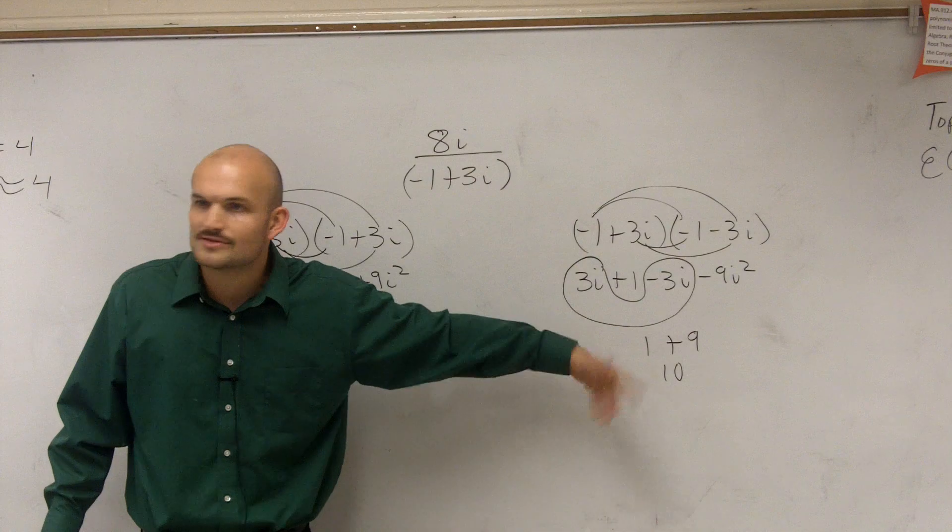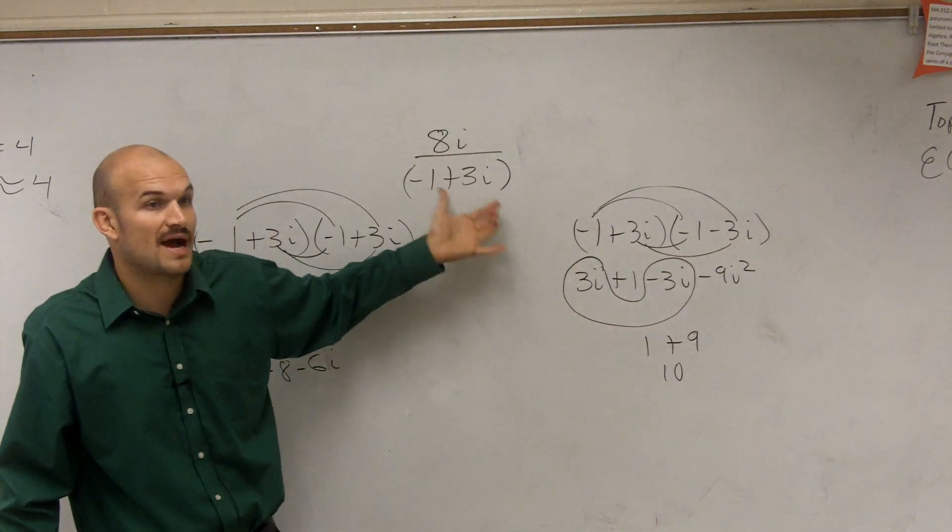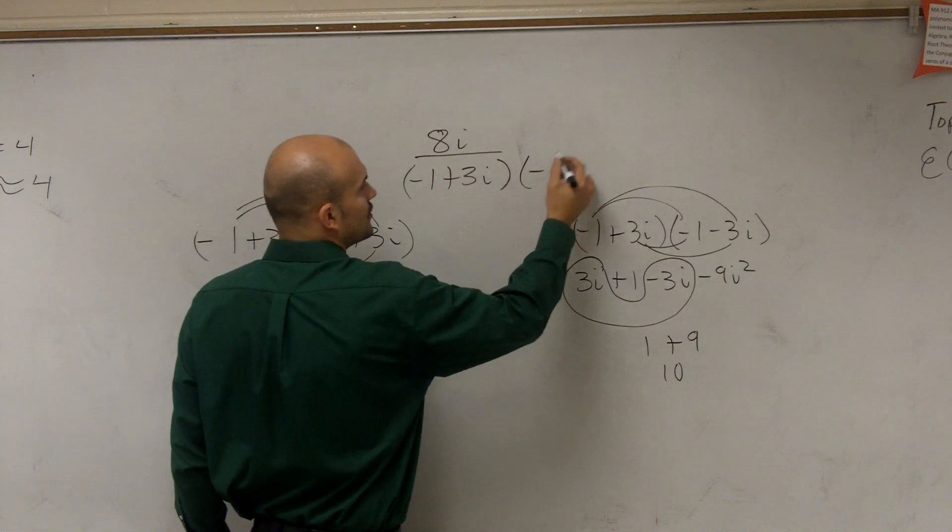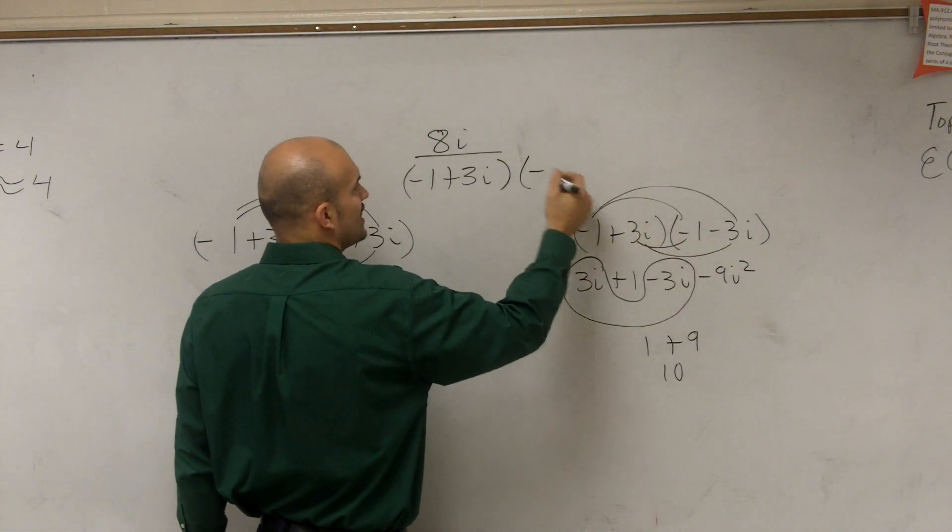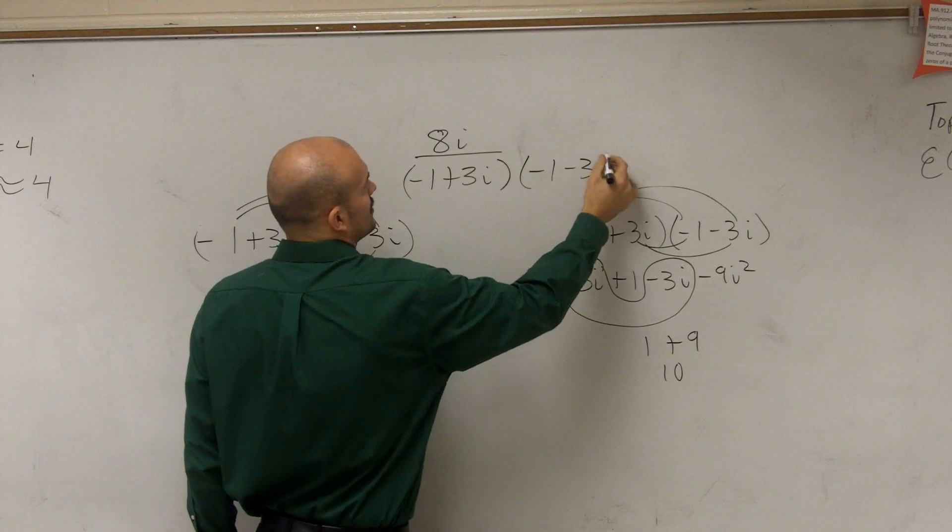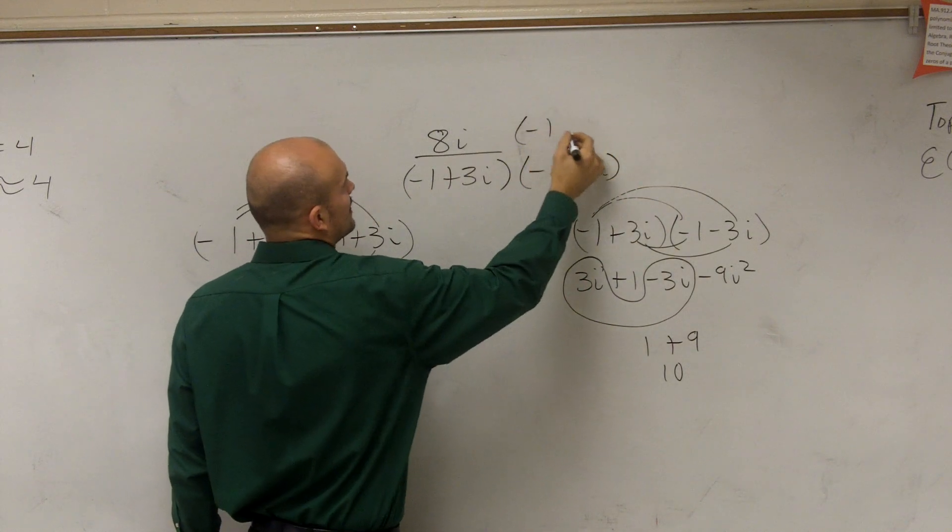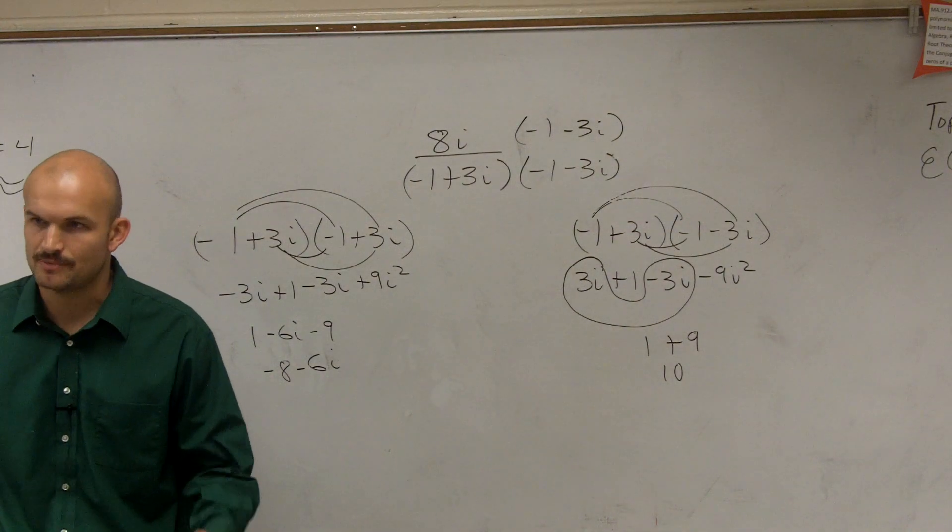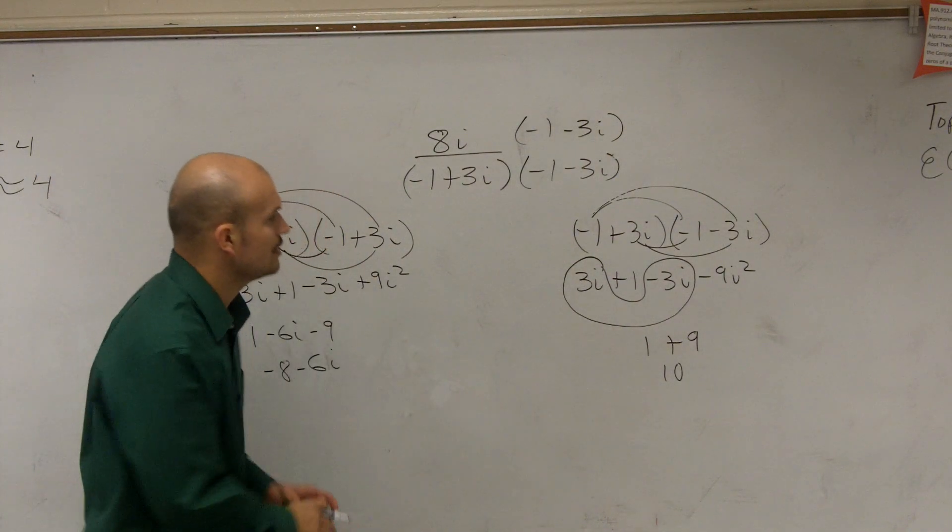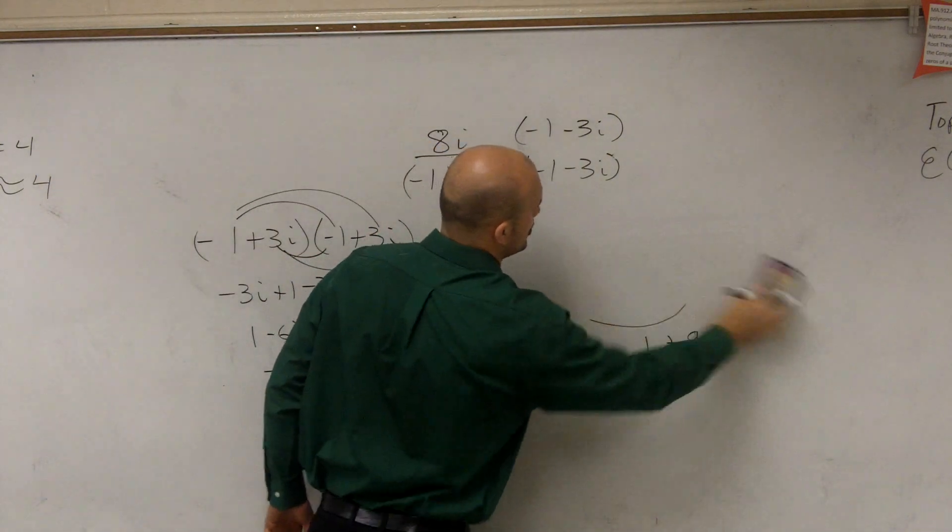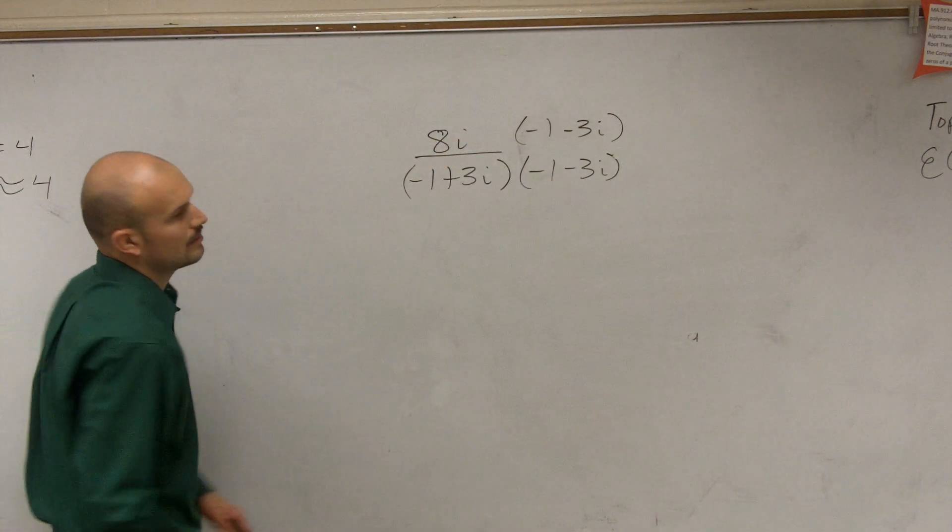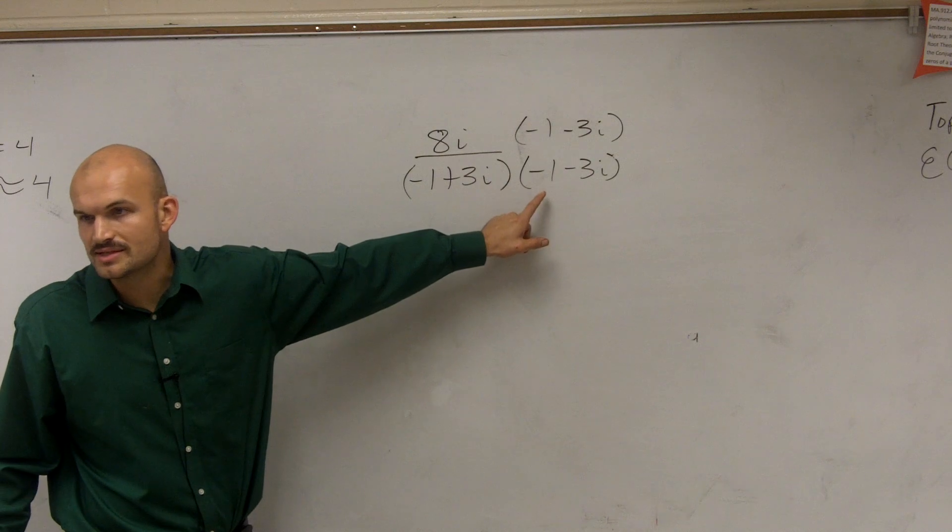Yes. So when you're left with dividing complex numbers and you have a binomial on the bottom, what you're now going to want to do is multiply by the conjugate pair. So multiplying by i is not going to be enough when you have a binomial. You're going to have to multiply by the conjugate pair. So when multiplying by the conjugate pair, we notice that we said this went to 10.